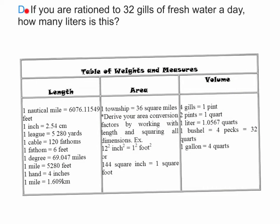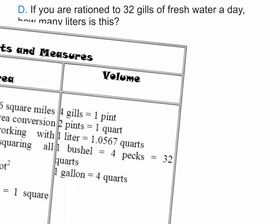Let's take a look at D. If you're rationed 32 gills of fresh water a day, how many liters is this? So we're going to be going from gills to liters. And when we reference our table, we're not going to be using length or area. Obviously, we're going to be using volume. So let's sort of highlight that a little bit.